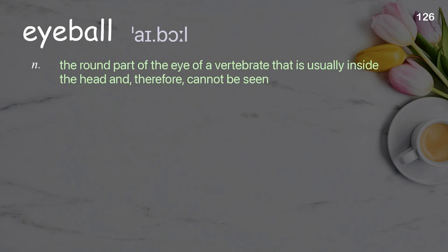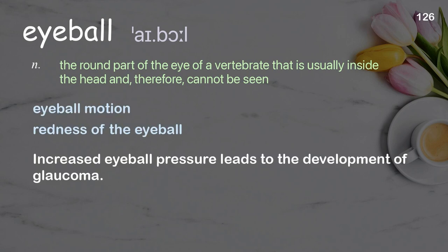Eyeball: the round part of the eye of a vertebrate that is usually inside the head and therefore cannot be seen. Examples: eyeball motion; redness of the eyeball; increased eyeball pressure leads to the development of glaucoma.